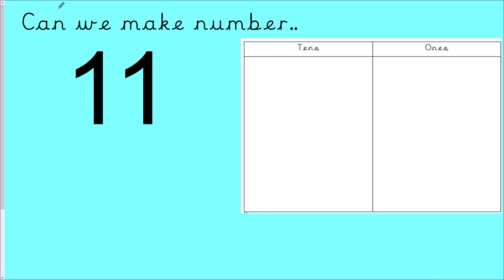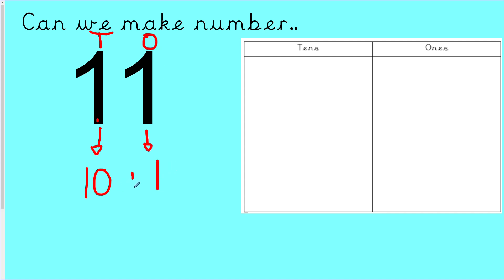Let's go back to our number eleven. We are going to draw the number eleven. Have a look at the number eleven — how many tens are in the number eleven? Remember we have our tens and our ones. How many tens do I have? I have one group of tens, because this number is ten. Ten and one is eleven — that's what we did yesterday. So this number here is ten. How many groups of tens do we have? We have one group of ten and I'm going to draw a dean rod to show that.